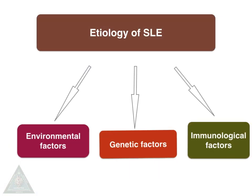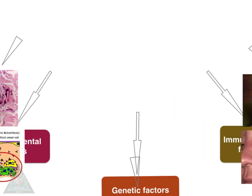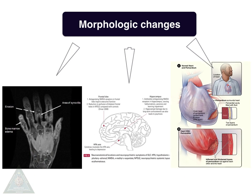The etiological factors of SLE are environmental, genetic, and immunologic. The morphologic changes ascribed to immune complex deposition around vessels in the kidneys and other organs include fibrinoid deposits near blood vessel walls resulting in vasculitis and arthritis, glomerulonephritis in the kidneys, malar butterfly rash, and non-erosive synovitis of the joints with little deformity — differentiating it from rheumatoid arthritis.